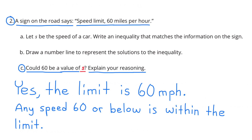Part C: Could 60 be a value of S? Explain your reasoning. Yes. The limit is 60 miles per hour. Any speed 60 miles per hour or below is within the limit.